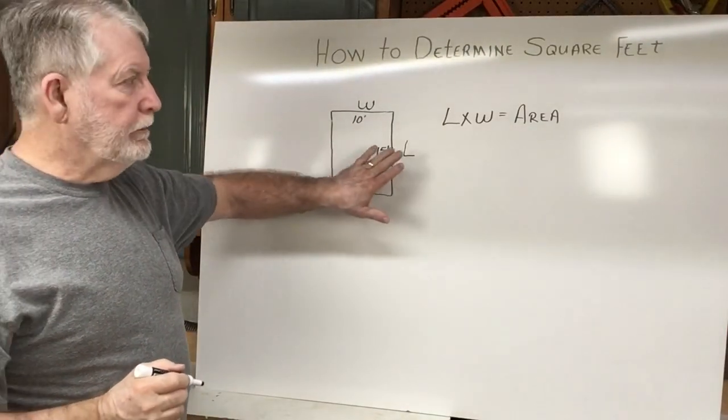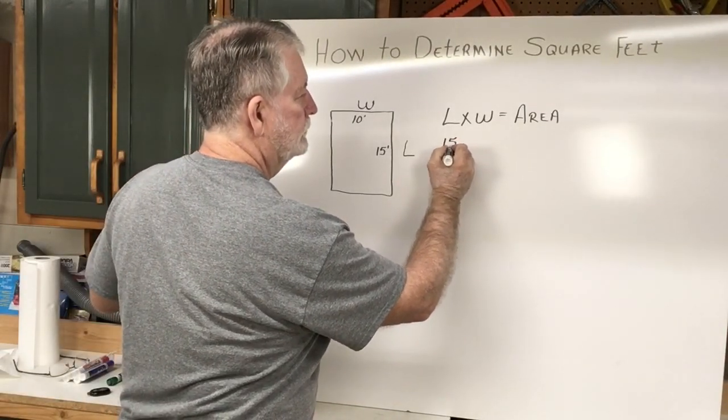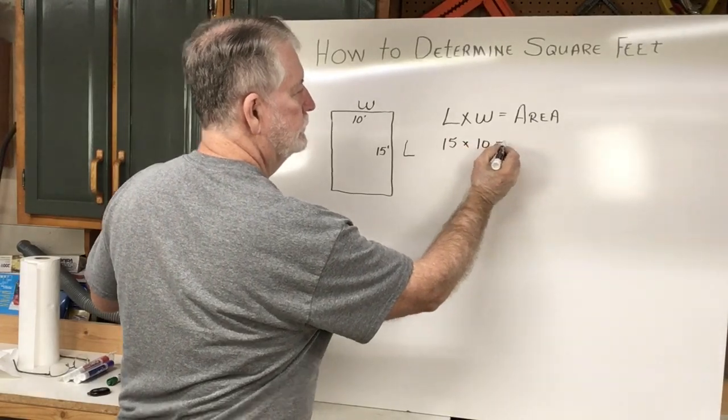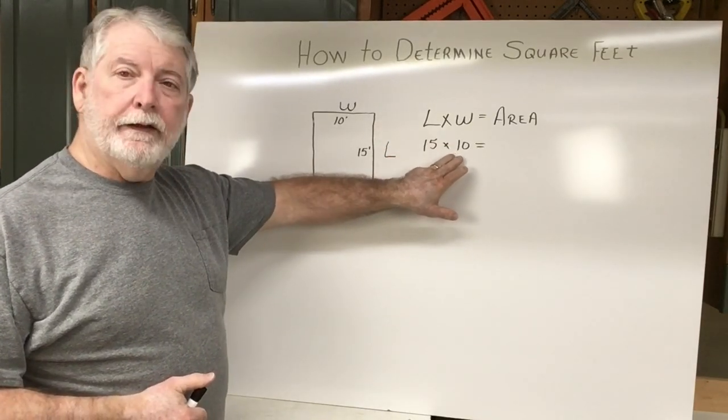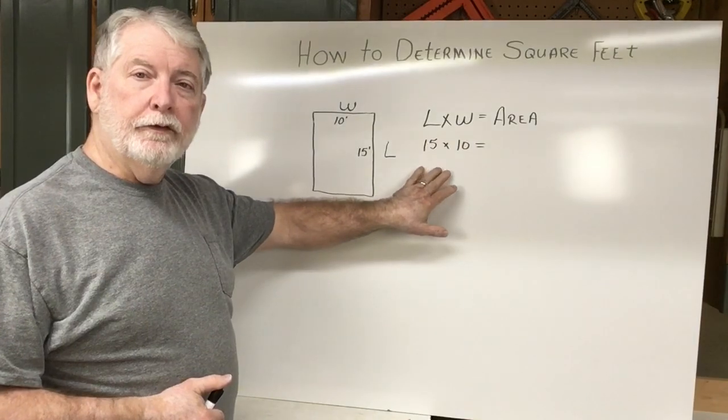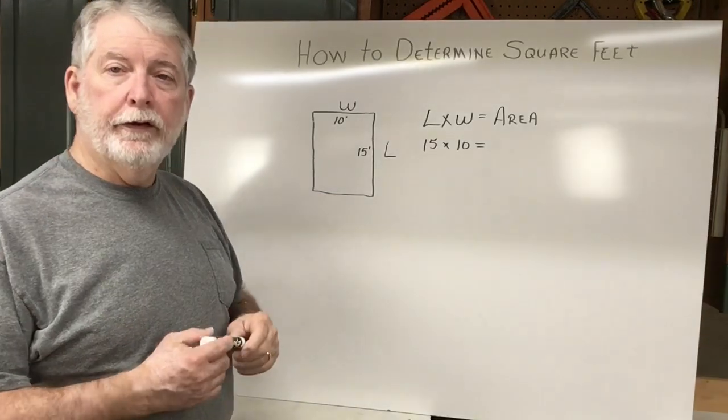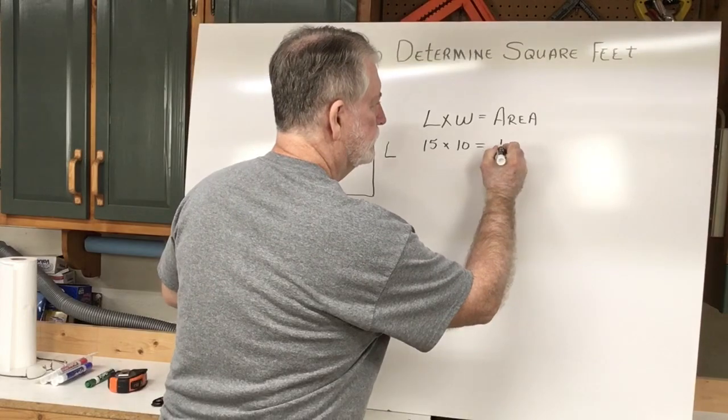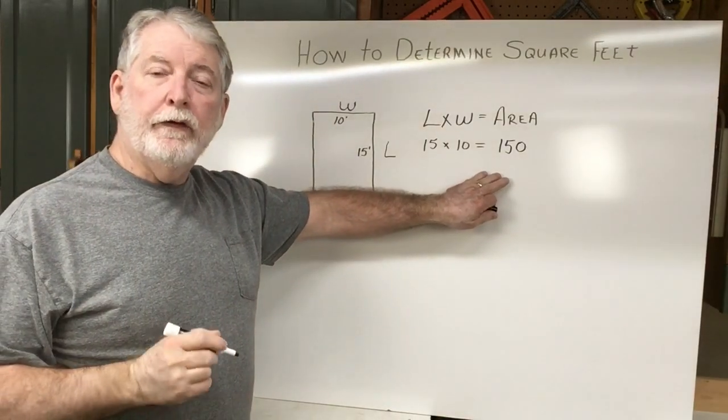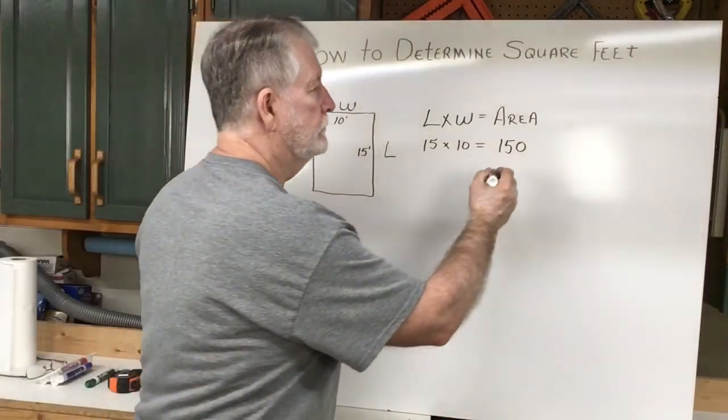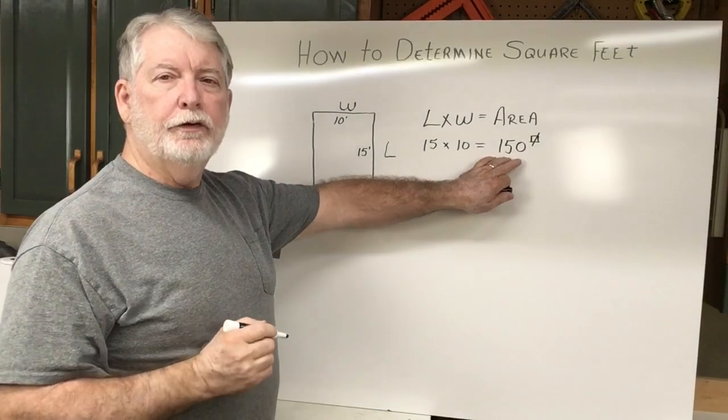So now that we have the measurements, let's plug it into our formula. So I take my two measurements, the 15 feet, which is the length, and the 10 feet, which is the width. I plug those into my formula. So 15 times 10 is going to be 150 feet. Now this 150 represents square feet. That's the little symbol that's used, but you can also just write out square feet.